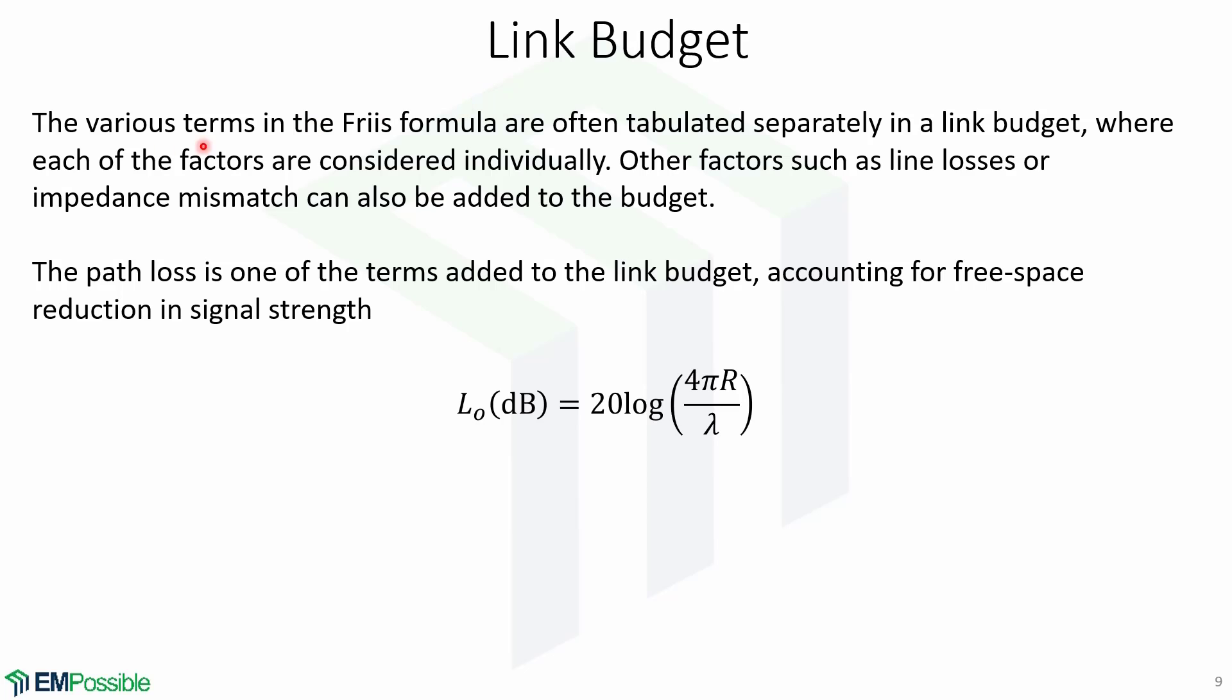Now, let's look at the link budget. The various terms in the Friis formula are often tabulated separately in a link budget, where each of the factors are considered individually. Other factors, such as line losses or impedance mismatch, can also be added to the budget.